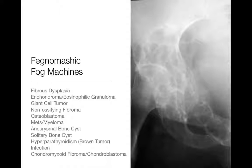FEGNOMASHIC or FOG MACHINE — all these things are good to think about in a differential for benign lytic bone tumors. This is not a complete list, and depending on where the tumor is located, the age of the patient, or if there's one or multiple, you're going to refine this list. Don't just recite everything on the list as soon as you see a lytic bone tumor. The point is to think about them and intelligently whittle some away.